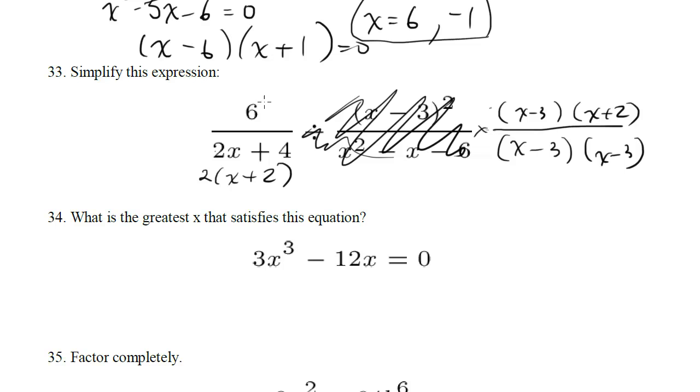Now we just go ahead and cross out factors. This 2 is going to get rid of this 6, make it a 3. This x plus 2 is going to cancel this. This x minus 3 is going to cancel that. So all we're left with in the end is 3 on top and x minus 3 on bottom.